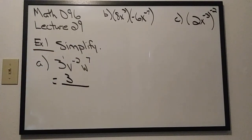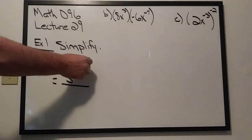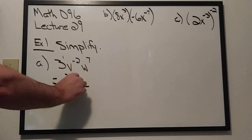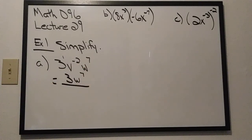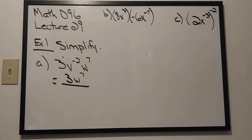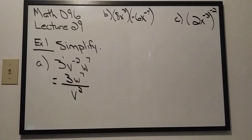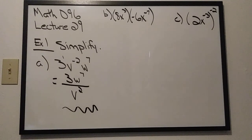This w to the seventh also has a positive exponent and is currently in the numerator — that positive exponent is not going to move it. The only piece that has a negative exponent is the v. So v to the negative second power, currently in the numerator, is going to move out into the denominator as v to the positive second power. At that point we're done. Be careful not to connect a negative exponent to something that doesn't have one.